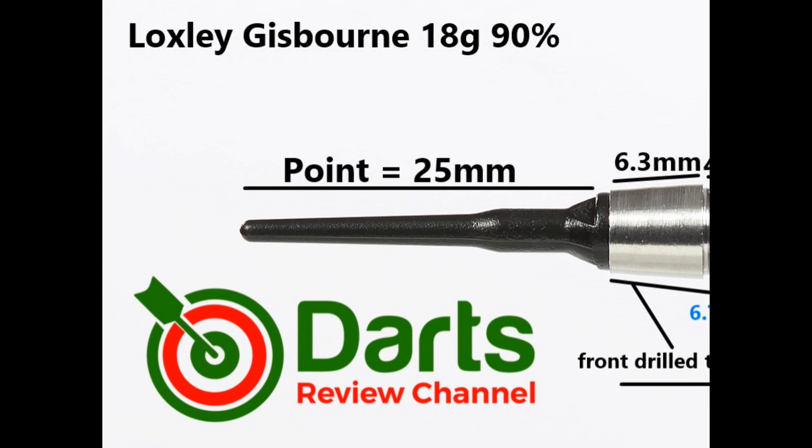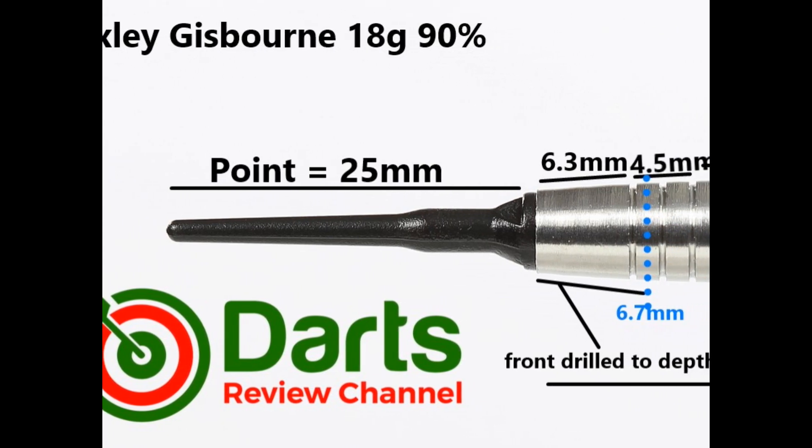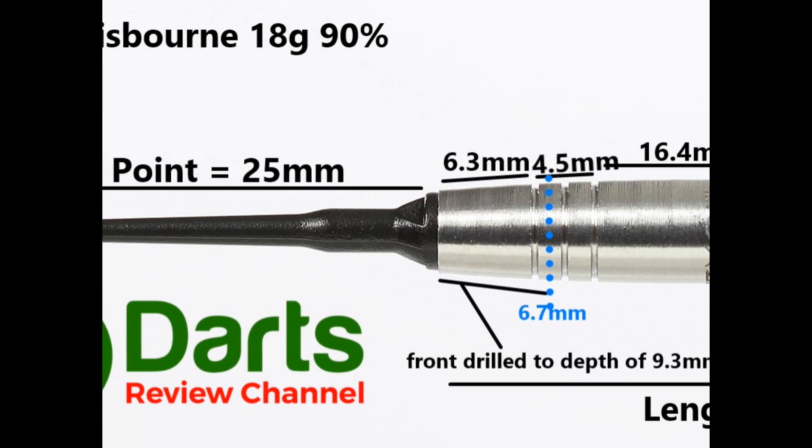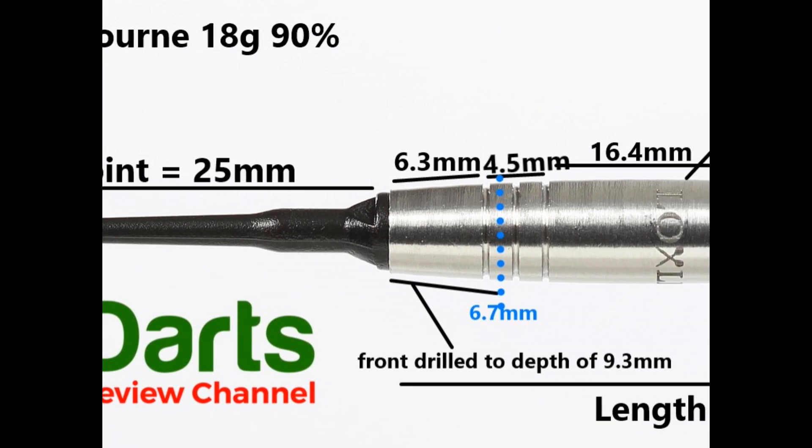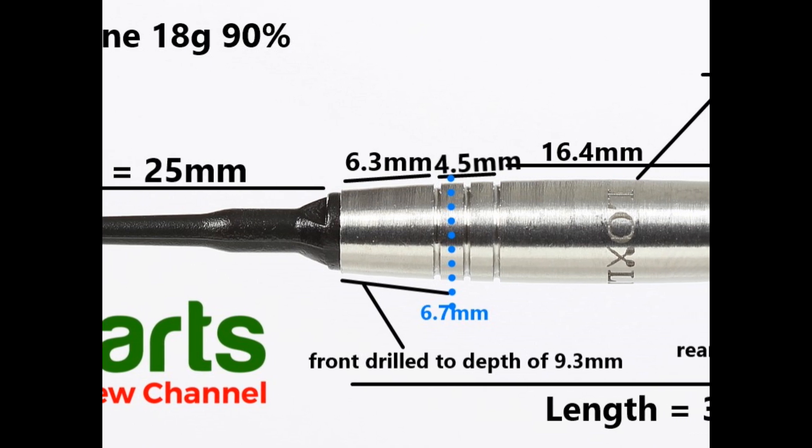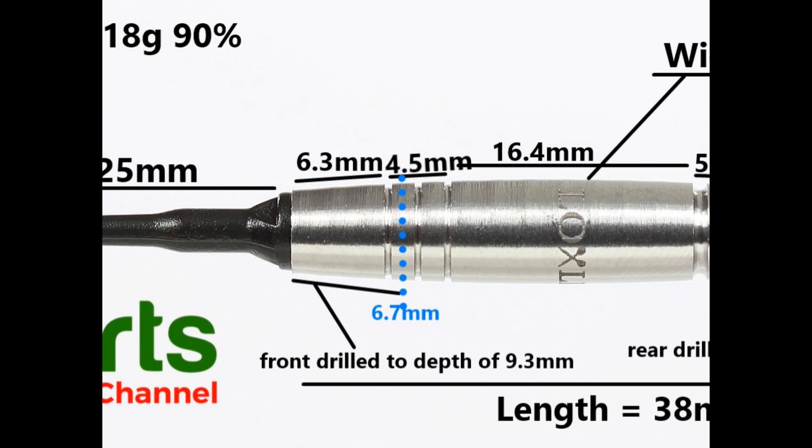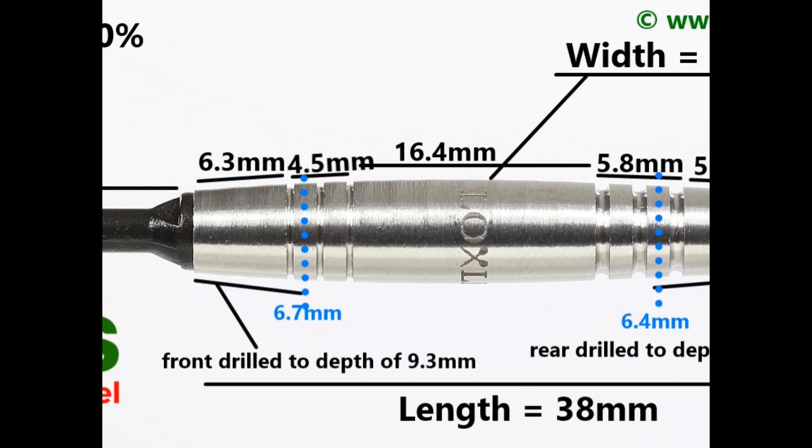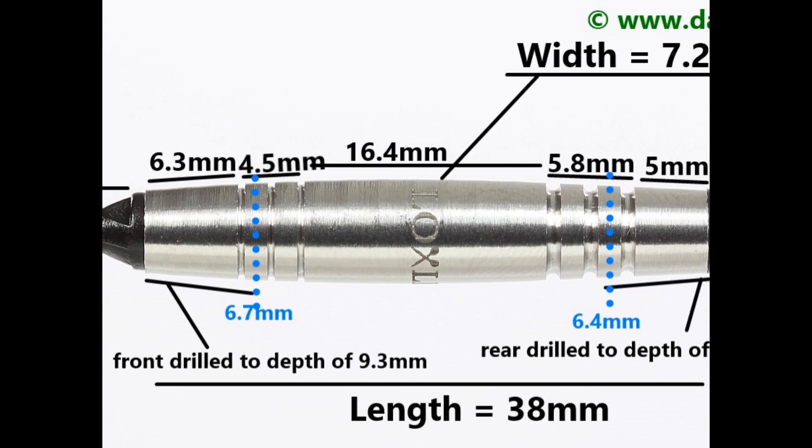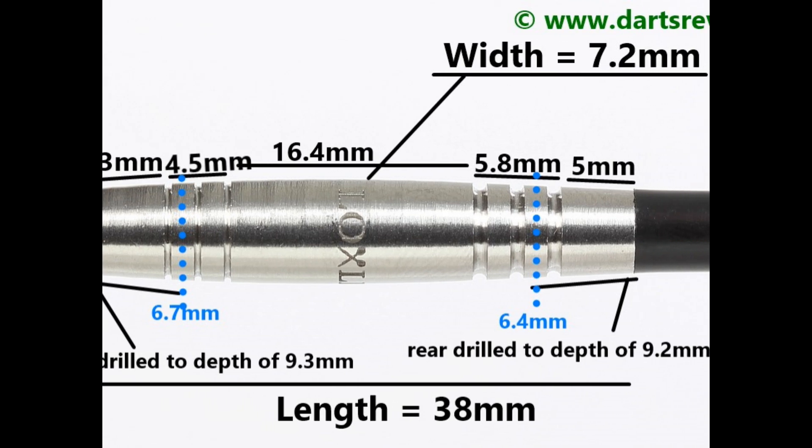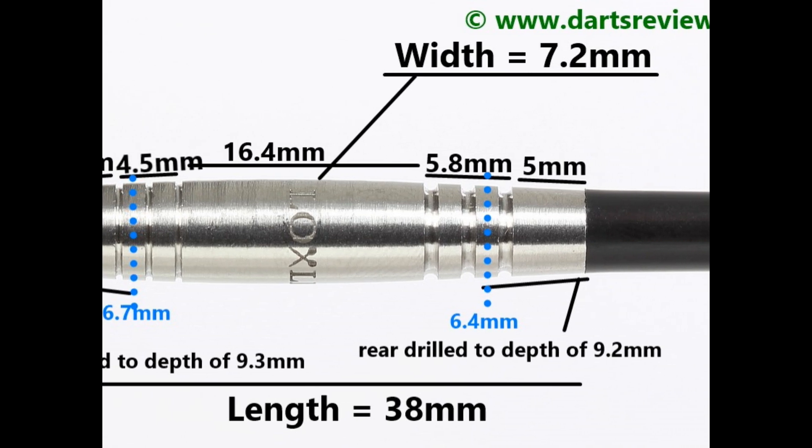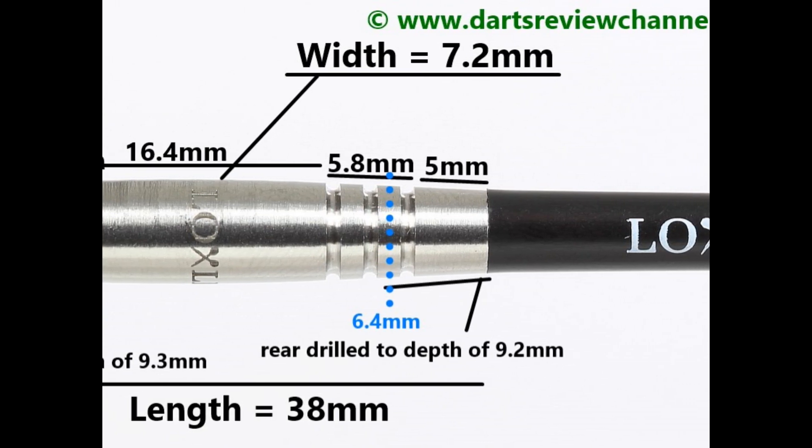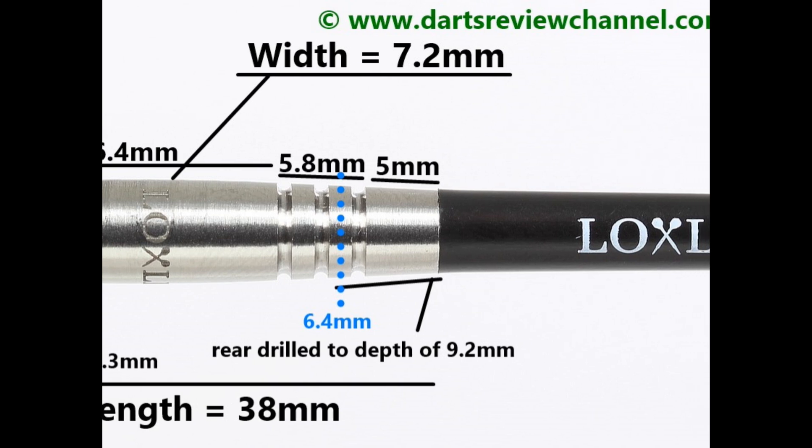The darts come fitting with 25mm soft tips. The front of the barrel is a smooth tapered section that's 6.3 millimeters then you've got some fine rings and groove that's 4.5 millimeters. Middle section is tapered both ends that's 16.4 millimeters and that's all smooth. Then on the rear you've got a ring grip with deeper grooves that's 5.8 millimeters then a smooth taper on the very end 5.5 millimeters. Length 38 millimeters wider 7.2 millimeters.